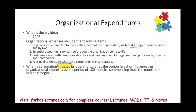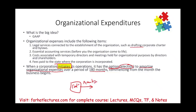When the corporation initiates its operation — when they start their business — they have the option, notice it's an election, to amortize organizational expense over a period of 180 months commencing from the month the business begins. So from the time you start your operation, you treat those costs as an asset — as an intangible asset — and then amortize it over 180 months. Is that all? No.